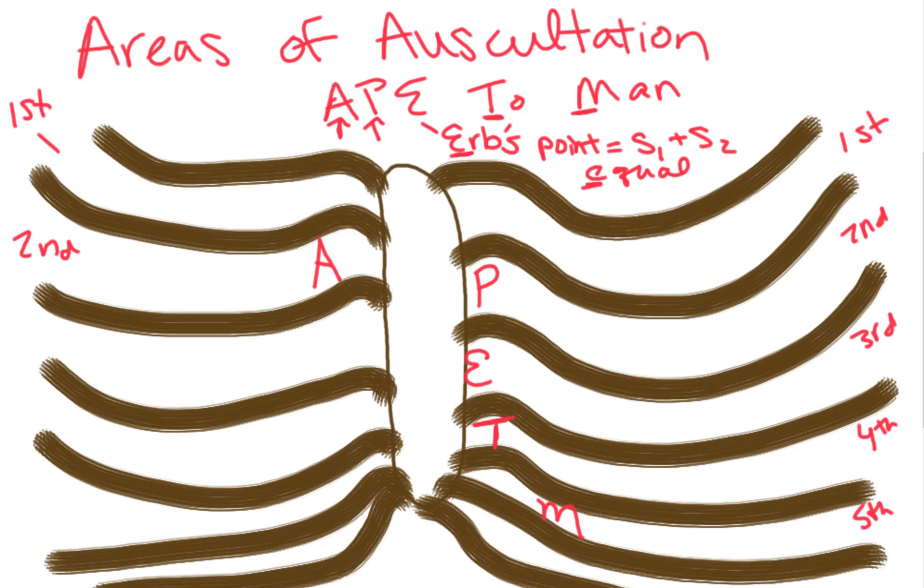That's APE TO MAN. The whole point is to help you locate where the murmur is coming from. First, listen for whether the murmur is happening during systole or diastole. If it's during diastole, you might hear lub-shh instead of lub-dub. This means either the valves that should be open are stenosed, or the valves that should be closed are regurgitating.